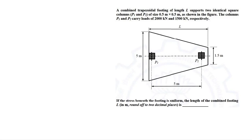In this video we will see a question from GATE 2021 about combined trapezoidal footing. It says a combined trapezoidal footing of length L supports two identical square columns P1 and P2 of size 0.5 meter by 0.5 meter as shown in the figure.